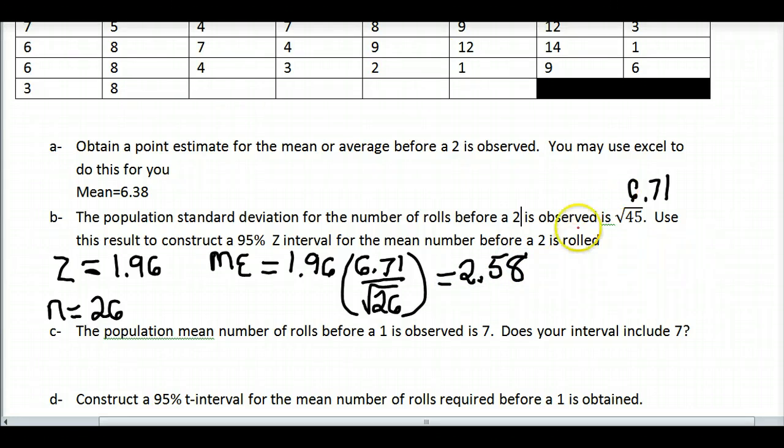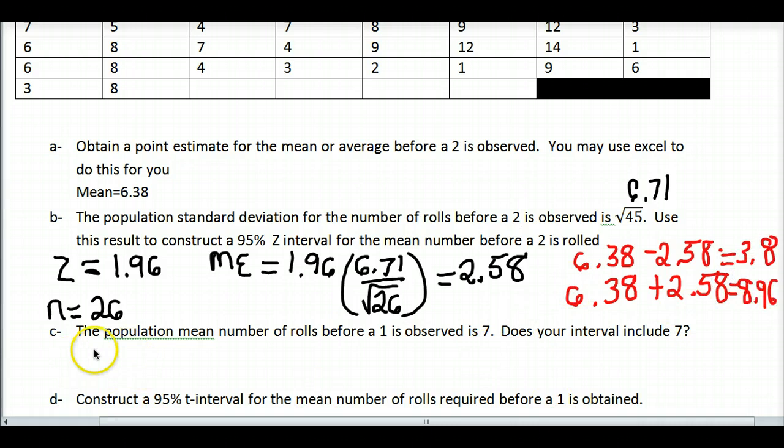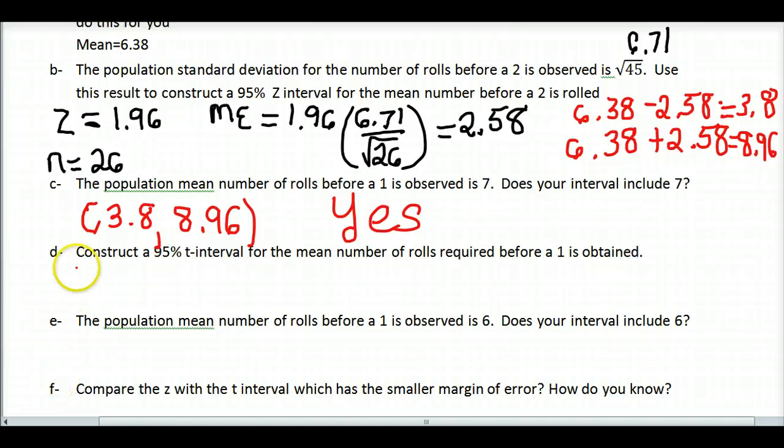To get my confidence interval, I want to take my average, 6.38, subtract my margin of error, and add my margin of error. So what I see here is that the confidence interval, or 95% of the time if we were to do this experiment, the average would be between 3.8 and 8.96. The population mean is 7. Does my interval contain 7? Yes, it sure does. 7 is in between the lower bound, 3.8, and the higher bound, 8.96. Now let's take a look at creating the t interval.